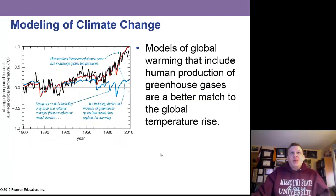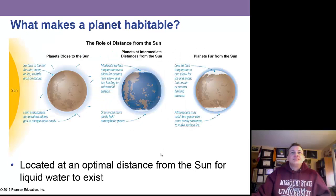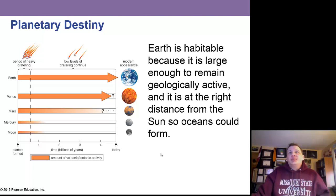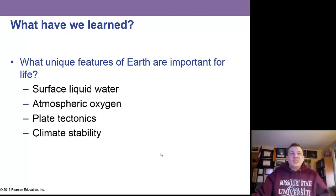Climate models that include human production of greenhouse gases are a better match to observed global temperature rise. What makes a planet habitable? It must be located at an optimal distance from the sun for liquid water to exist — the life zone, also called the Goldilocks zone. It must also be large enough for geological activity to release and retain water in the atmosphere. Earth is habitable because it is large enough to remain geologically active and sits at just the right distance from the sun. Human activity is releasing carbon dioxide into Earth's atmosphere, increasing the greenhouse effect, and producing global warming.